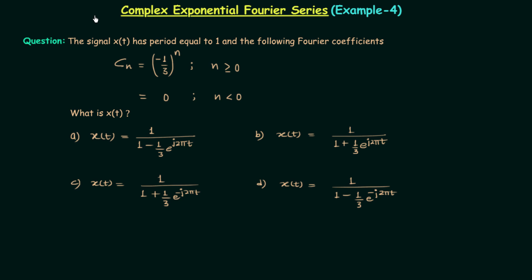We will continue our discussion on complex exponential Fourier series. In this presentation we are going to solve the fourth example. In this example the signal X(t) has period equal to 1 and the following Fourier coefficients are given, and we are required to find signal X(t).